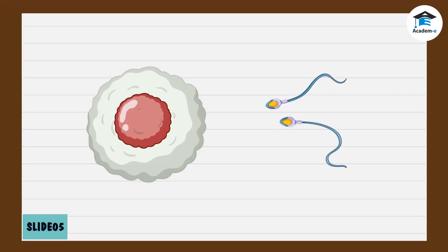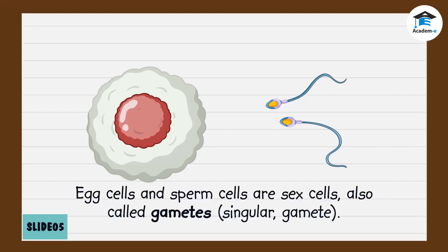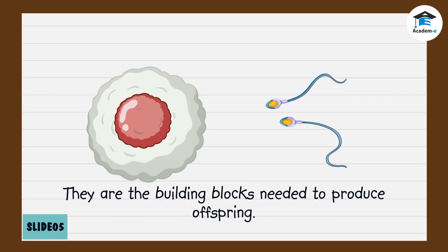The story of human reproduction starts with an egg cell and sperm cells. Egg cells and sperm cells are sex cells, also called gametes. They are the building blocks needed to produce offspring.